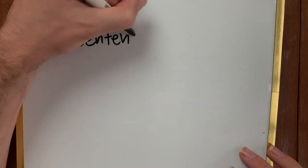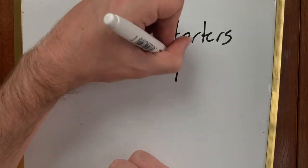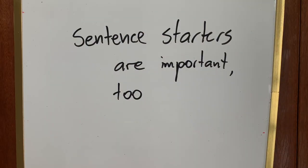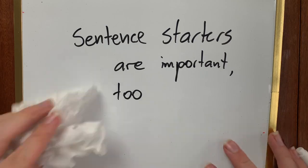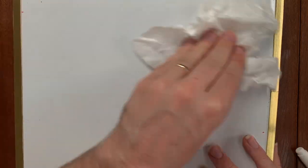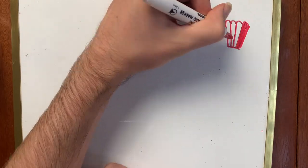Another easy way to vary your sentences is choosing different sentence starters. If I start my sentences the same way, they get jerky.